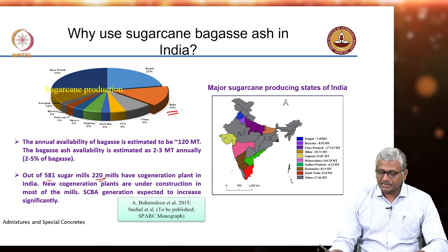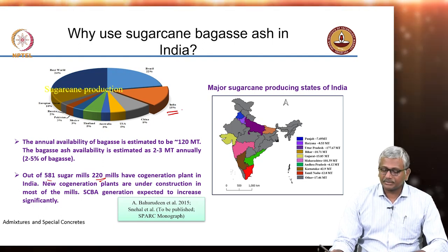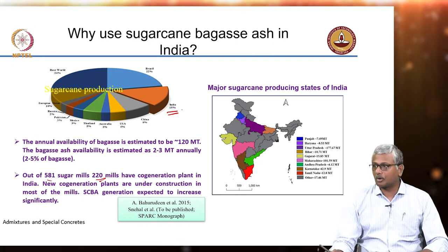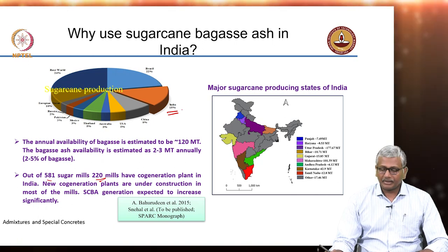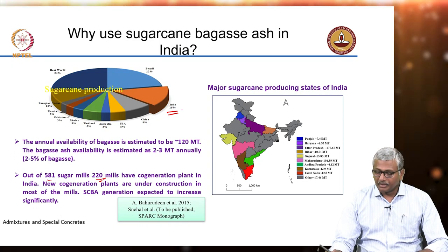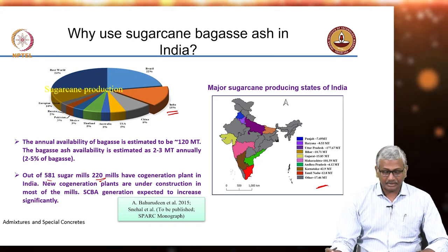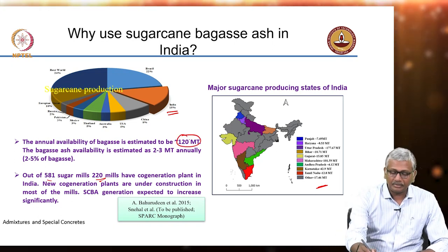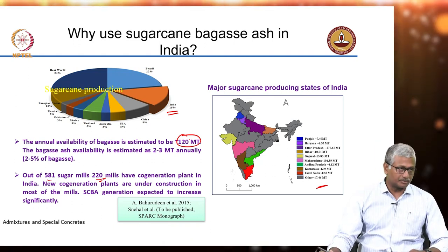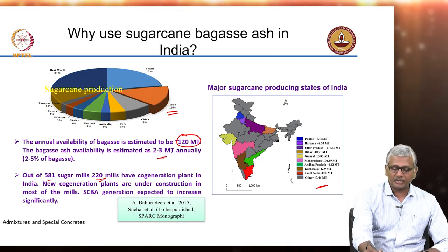Several states in India produce significant amounts of sugarcane — most of the southern states like Tamil Nadu, Karnataka, Andhra, then Maharashtra and Gujarat, and in the northern states the Indo-Gangetic plain is where a lot of sugarcane is grown. UP is one of the largest sugarcane producers in the country. About 120 million tons of bagasse is available from processing sugarcane, and when burnt, the quantity of bagasse ash available is nearly 2 to 3 million tons.